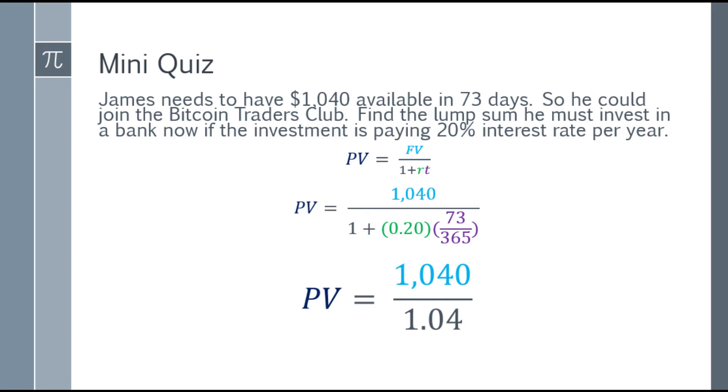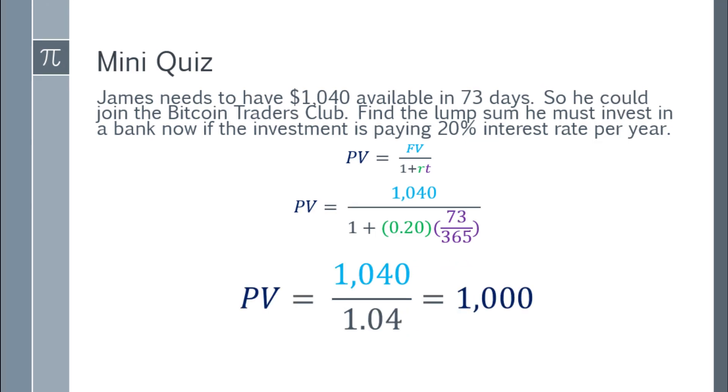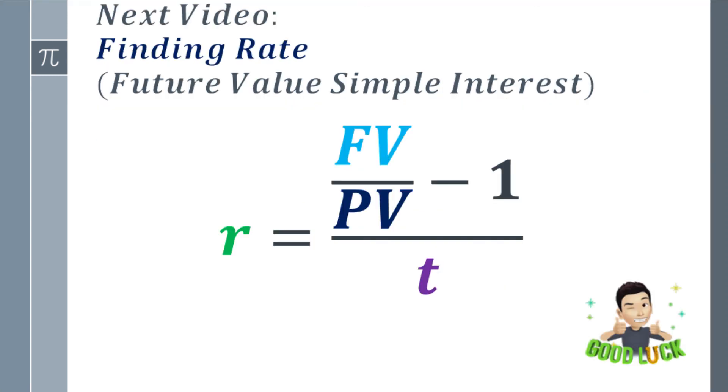Now, simplify it further. 1,040 divided by 1.04, that will be 1,000. So the present value is 1,000. So if James wants to get 1,040 in 73 days, and there's an investment in this bank with 20% interest rate per year, he needs to give or deposit $1,000. So that after 73 days, the future value he can get is 1,040. And that's the end of the lesson about finding the present value.